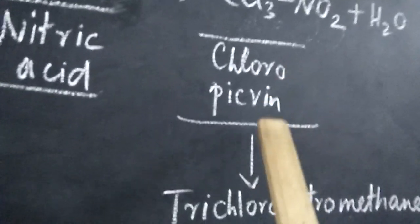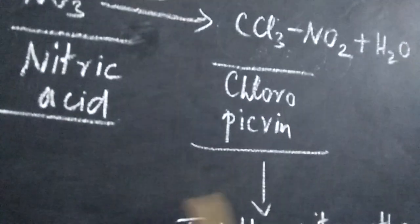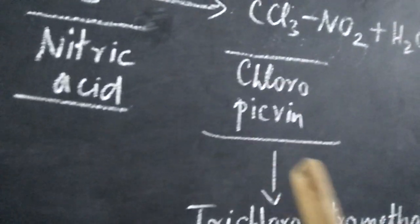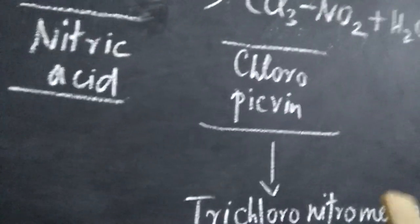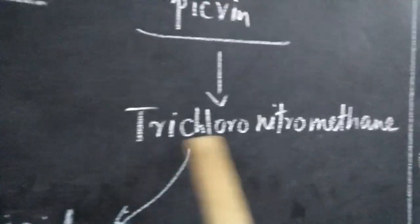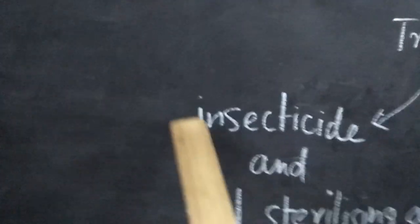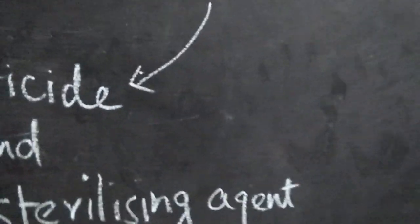Chloropicrin is a soil sterilizing agent. It is used to sterilize soil, like how your stomach is de-wormed by having a syrup. Soil is sterilized by chloropicrin. Trichloronitromethane is used as an insecticide and soil sterilizing agent.